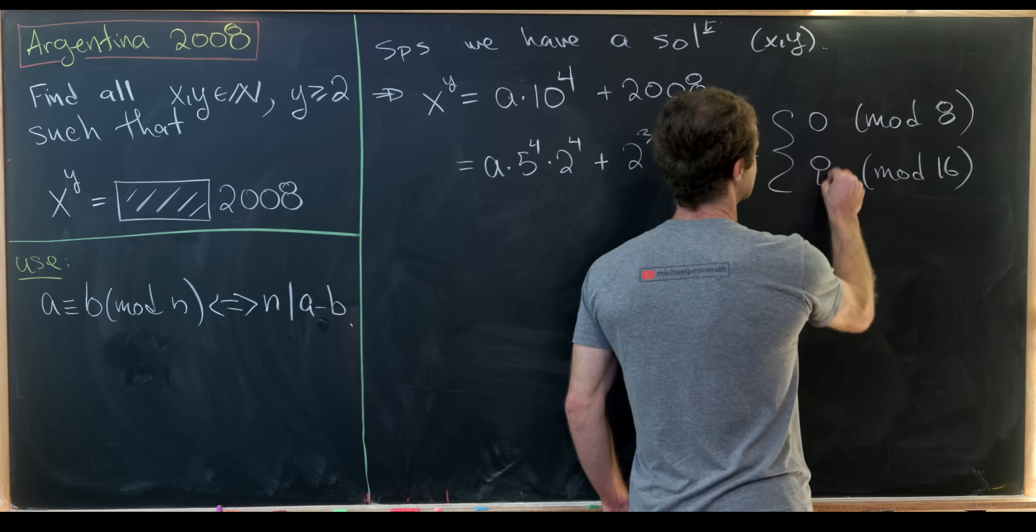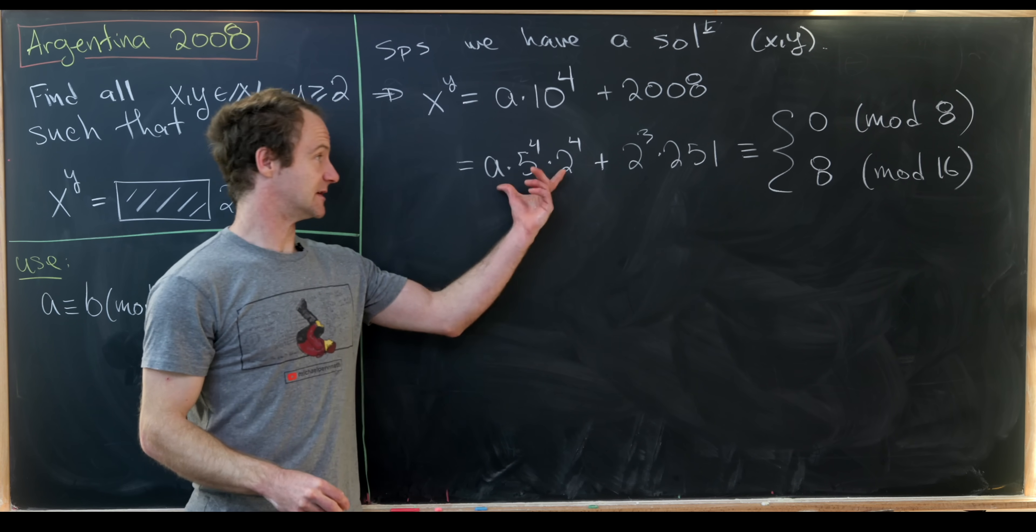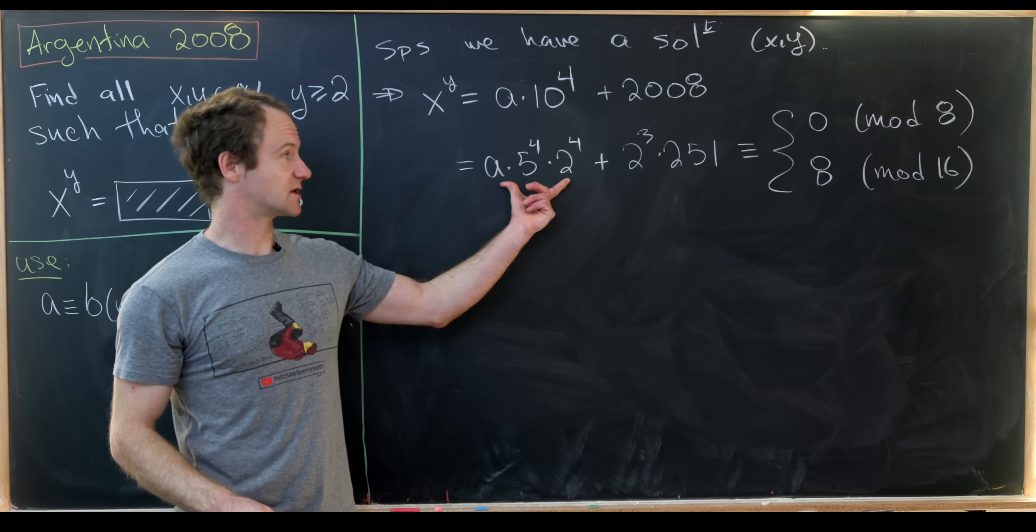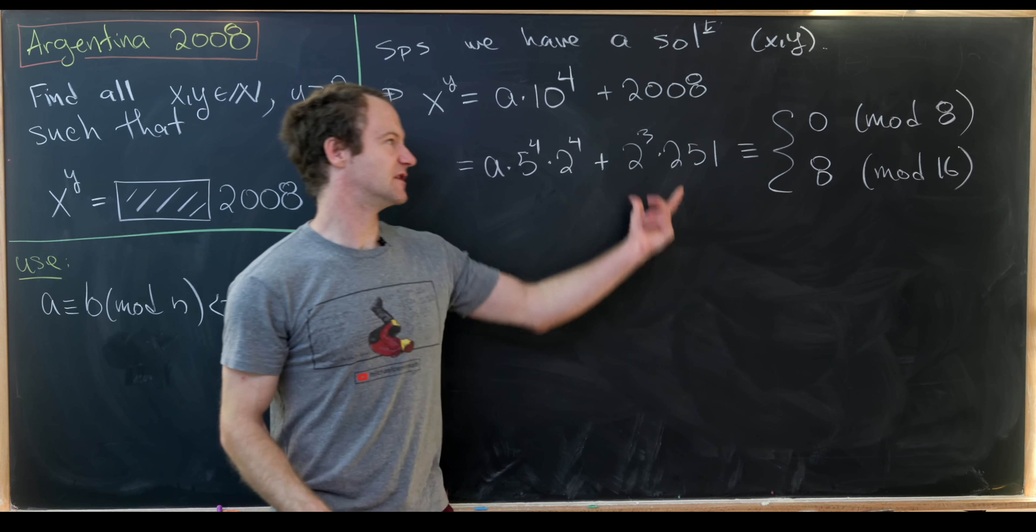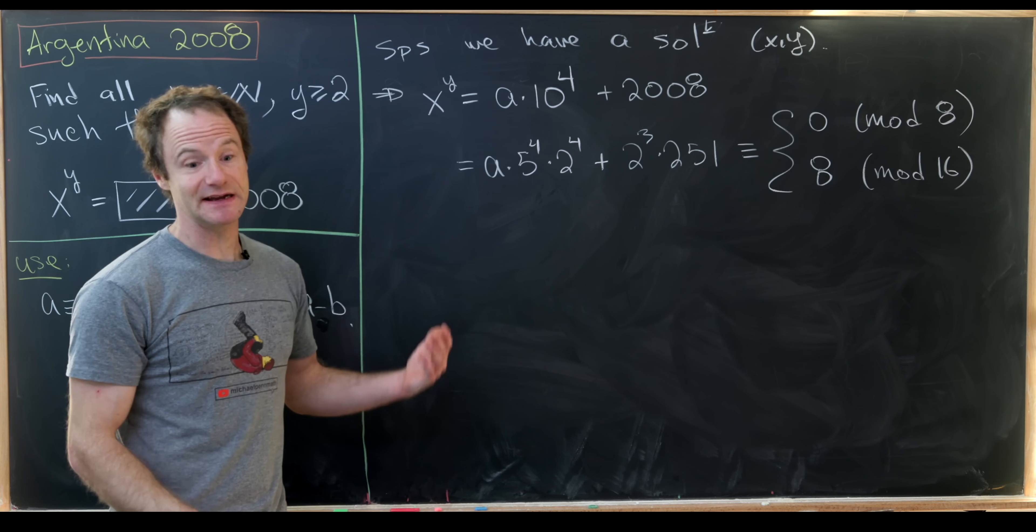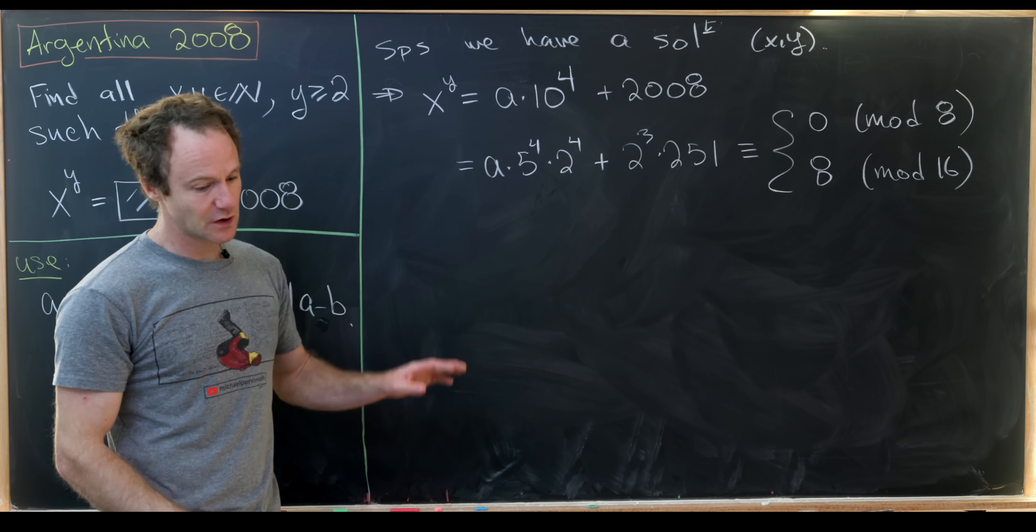In fact, you can check that this is 8 mod 16. So this big bit right here is congruent to 0 mod 16 and then the leftover stuff is 8 mod 16.